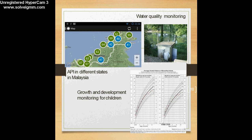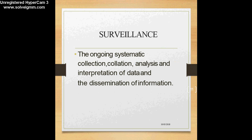Now let's move on to what is surveillance. Surveillance is the ongoing systematic collection, collation, analysis, and interpretation of data about different changes in disease trends, disasters, or forthcoming emergencies. This data is collected, organized, analyzed, and converted into information which is interpreted and disseminated to relevant people or agencies. Surveillance essentially means information for action — we are creating information so that action can be taken to protect the health of people at large.